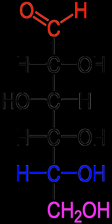Starch and sugars are the most important carbohydrates in human diet. They are found in a wide variety of natural and processed foods. Starch is a polysaccharide; it is abundant in cereals and processed food based on cereal flour, such as bread, pizza, or pasta. Sugars appear in human diet mainly as table sugar, lactose abundant in milk, glucose and fructose, both of which occur naturally in honey, many fruits, and some vegetables.